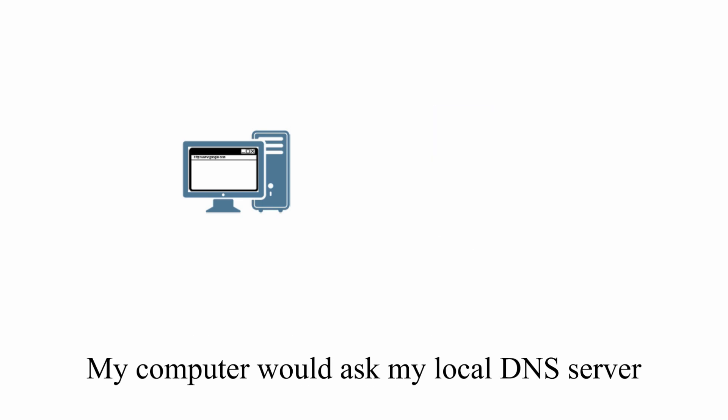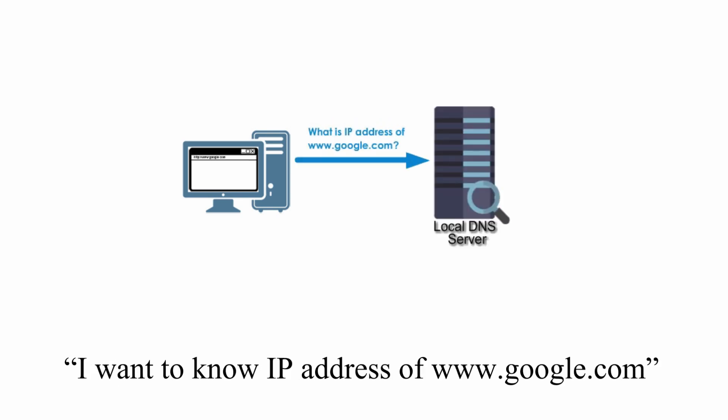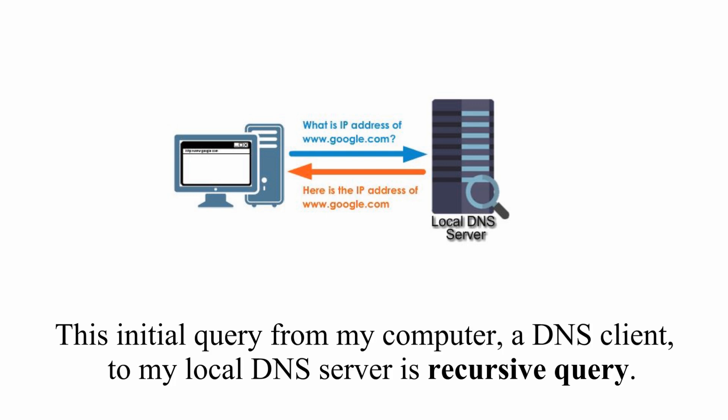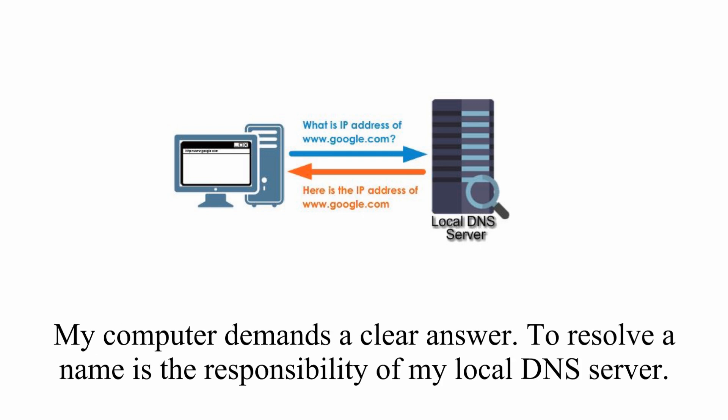My computer would ask my local DNS server: I want to know the IP address of www.google.com. This initial query from my computer — a DNS client — to my local DNS server is a recursive query, because my computer demands a clear answer. To resolve a name is the responsibility of my local DNS server.